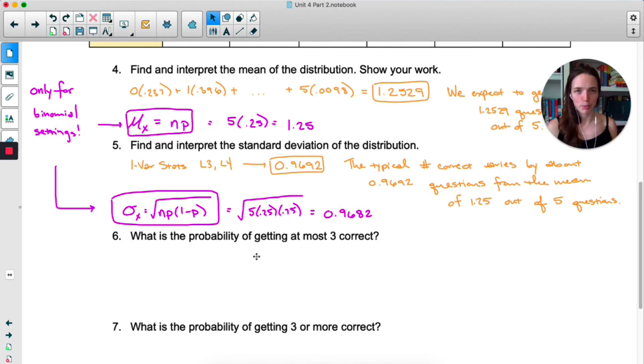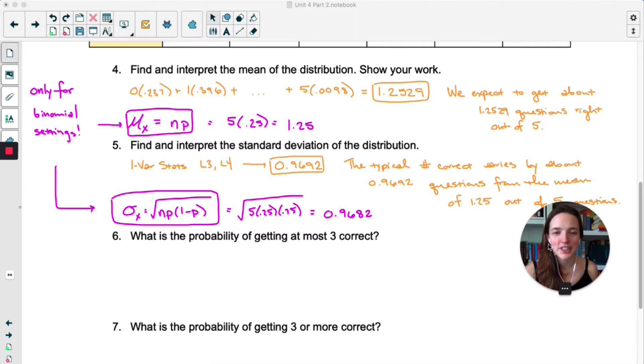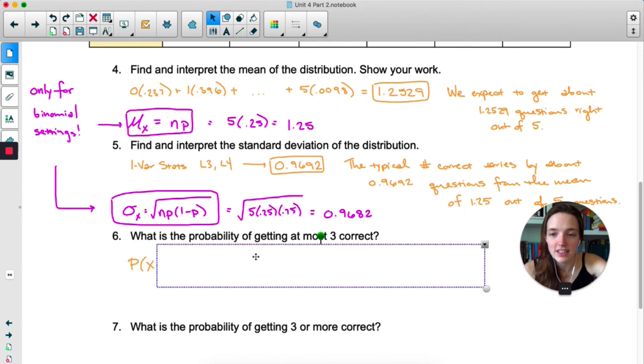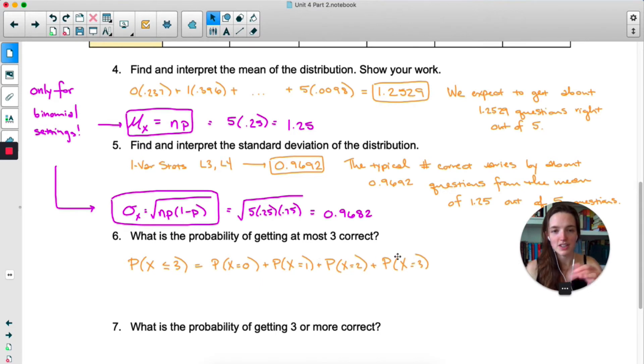Let's move on to these probability questions. I'm going to start these with you, and then you'll do them on your own, because I'm going to show you even more shortcuts. What's the probability of getting at most 3 correct? I always start these problems by writing out what we're asked to find in symbols. So this is asking us to find the probability that x is less than or equal to 3. At most 3 would be 0, 1, 2, or 3. Now we could do this one at a time.